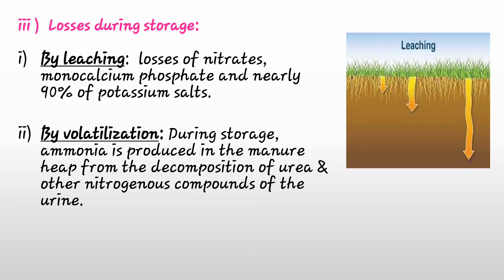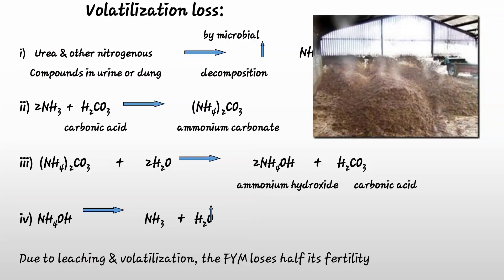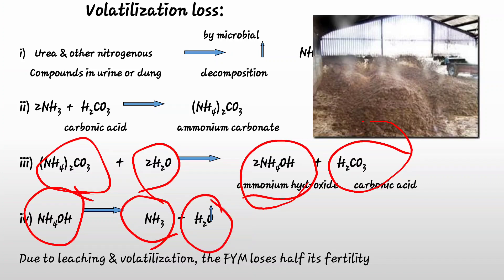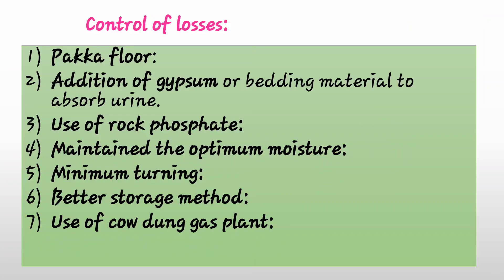In evaporation loss during storage, urea and other nitrogenous compounds in urine and dung produce NH₃, which reacts with carbonic acid to form ammonium carbonate. Ammonium carbonate reacts with water to form ammonium hydroxide and carbonic acid, and ammonium hydroxide further decomposes to form gaseous ammonia and water — this represents the volatilization loss.